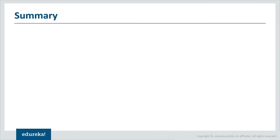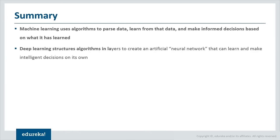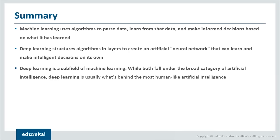To summarize: machine learning uses algorithms to parse data, learn from it, and make informed decisions. Deep learning structures algorithms in layers to create artificial neural networks that can learn and make intelligent decisions on their own. Deep learning is a subfield of machine learning, and both fall under the broad category of AI — deep learning is usually what's behind the most human-like artificial intelligence.